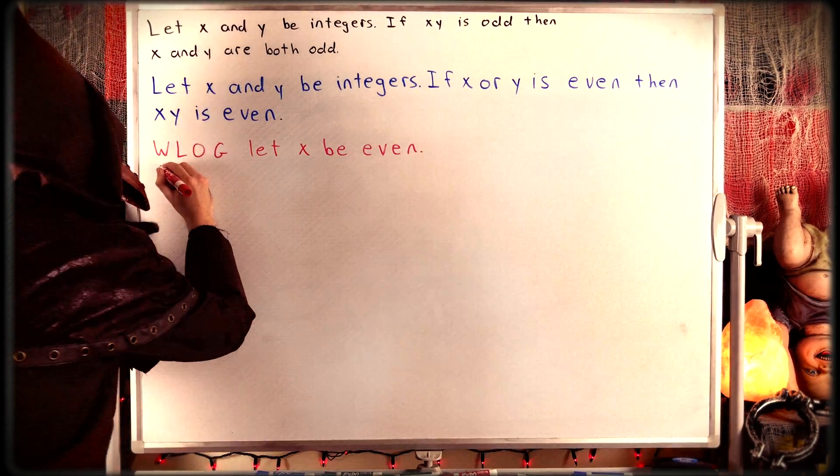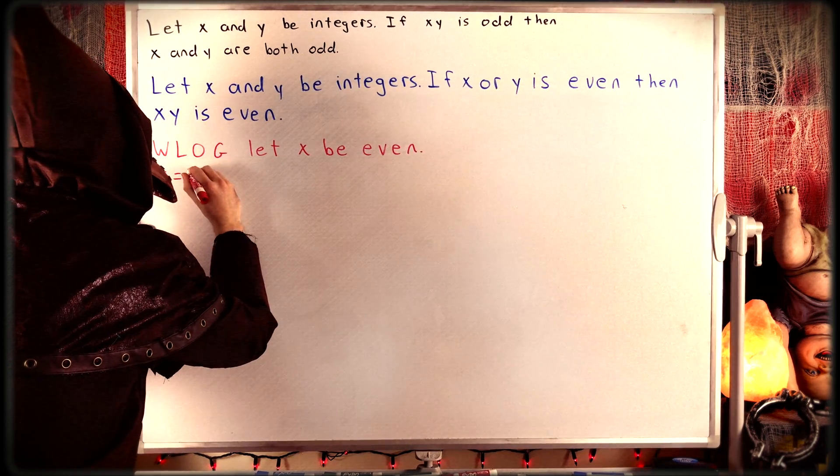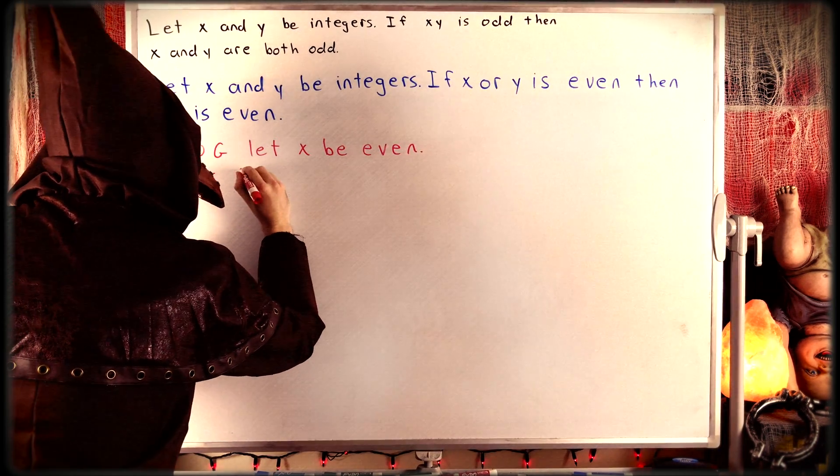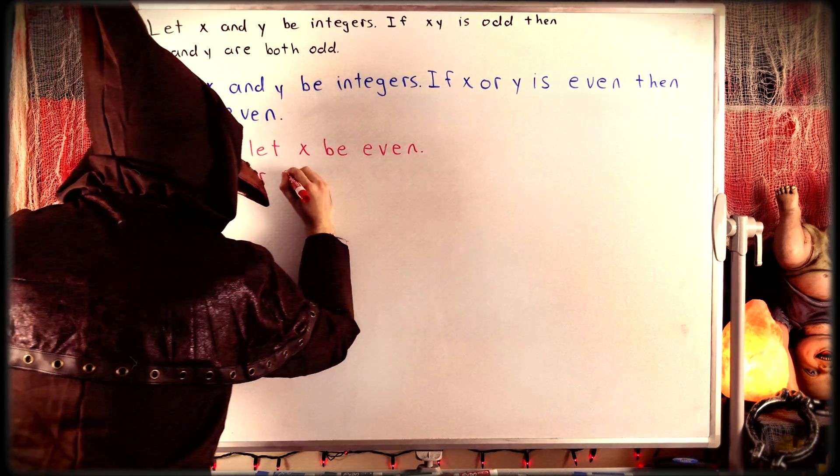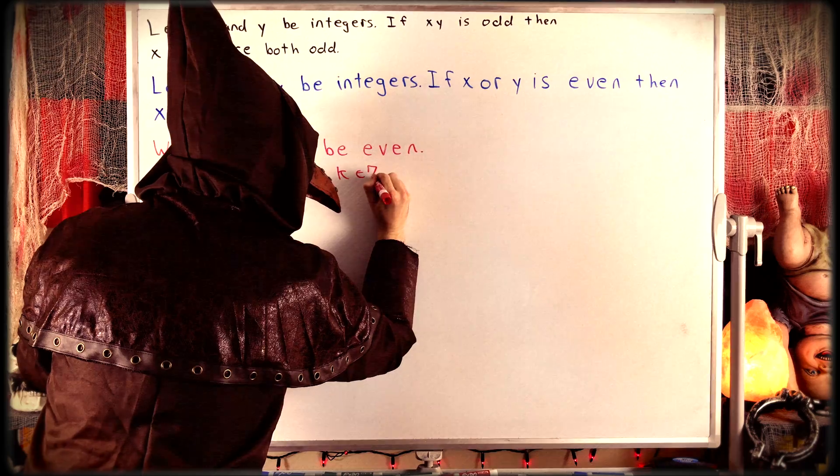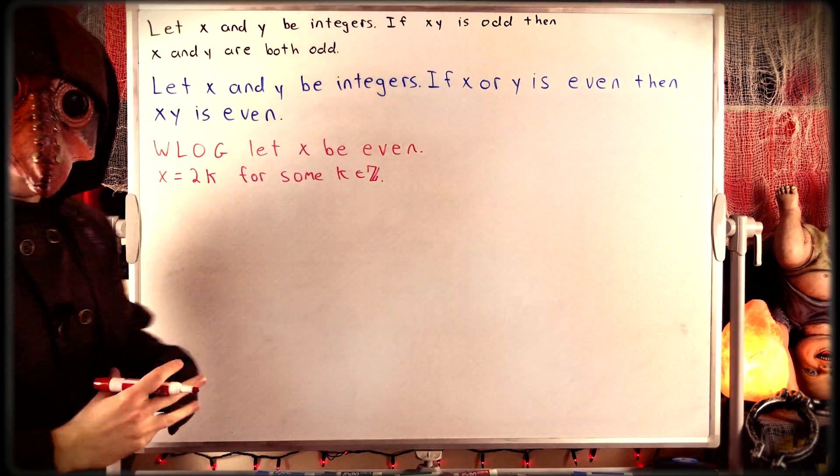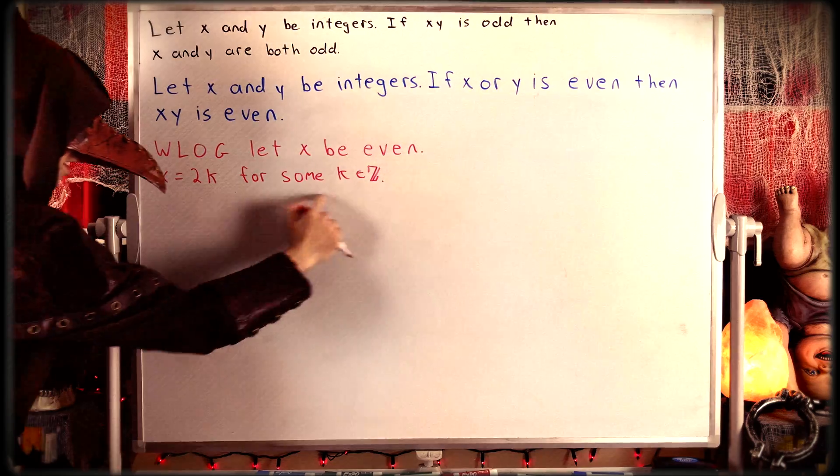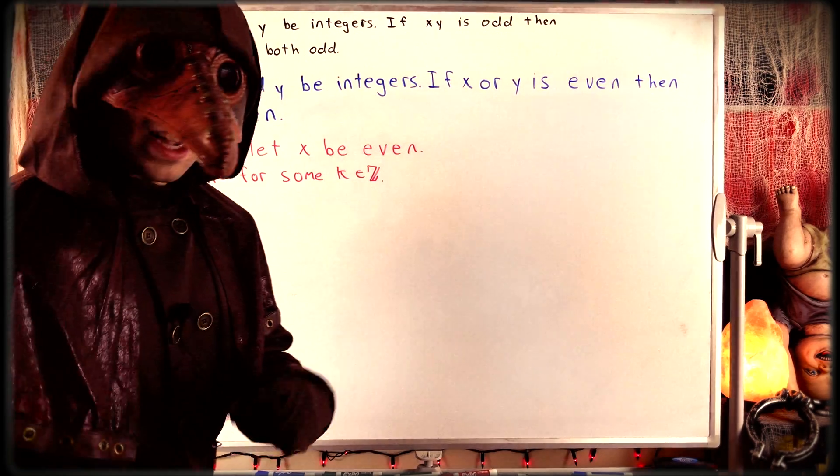This means, by definition of an even integer, that x must be some multiple of 2. So x is equal to 2 times k for some integer k, for some k that's an element of the integers. Again, that's by definition of an even number. Since x is even, it must be equal to some integer multiple of 2.